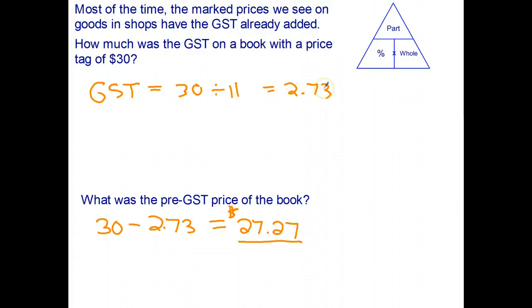An alternative way of doing it is to take the GST and just multiply it by 10, because the GST is 10%, the pre-GST price is 100%. So we can go $2.73 multiplied by 10, and that gives us $27.30. If I'm going to do it that way, I've got to keep a few more decimal places, so maybe that's the more accurate way.